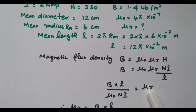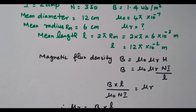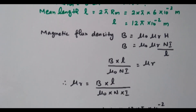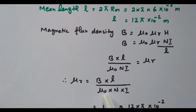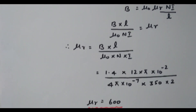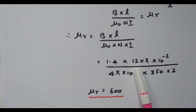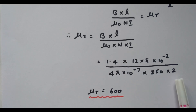Rearranging to find μR, we bring other terms to the left-hand side: μR = BL divided by μ₀NI. Substituting B = 1.4, L = 12π × 10⁻², μ₀ = 4π × 10⁻⁷, N = 350, and I = 2 amperes, we get μR = 600. The relative permeability of the iron ring is 600.